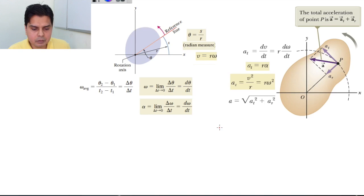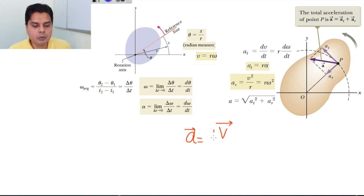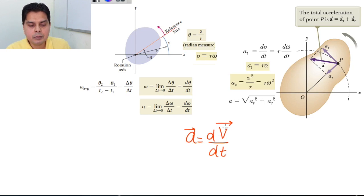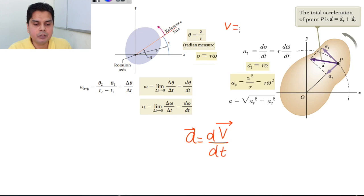Velocity is a vector, so it has both a magnitude and a direction. The acceleration is a = dv/dt — the rate of change of velocity. Since velocity is a vector, it can change because its direction has changed or because its magnitude has changed.